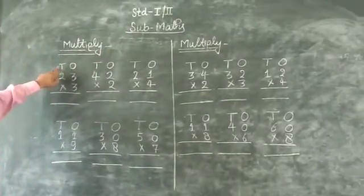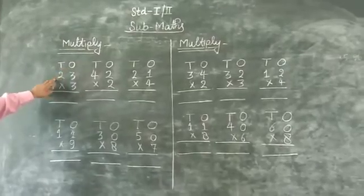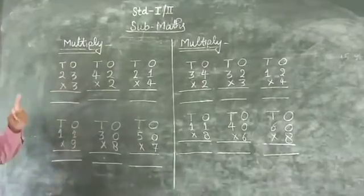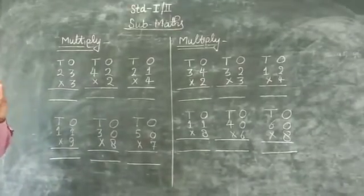3 for 10, 4 for 1. 43, multiply 3. 3 by 3, 3 by 6, 3 by 6.